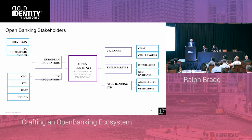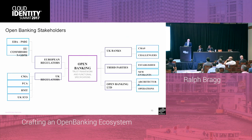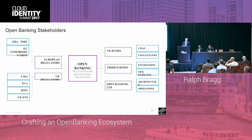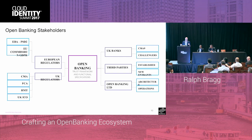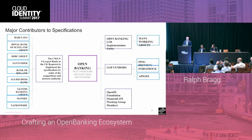Touching quickly on the Open Banking stakeholders: we've got the European regulators, the UK regulators, the UK banks including both challengers and the existing CMA9. We've got to take into account third parties — both new entrants wanting to play in this new ecosystem and existing third parties that may be doing screen scraping today. And then we've got the Open Banking Implementation Entity, or Open Banking Limited, managing all these stakeholders together. Major contributors include the nine banks, industry experts such as the OpenID Foundation's Financial API Working Group, Ping Identity, ForgeRock for IAM, and additional experts recruited by the Open Banking Implementation Entity.